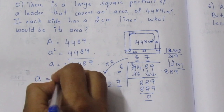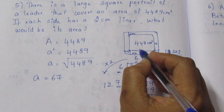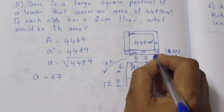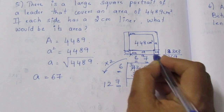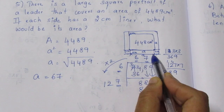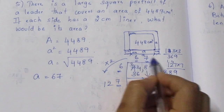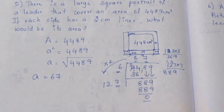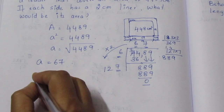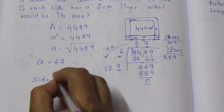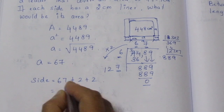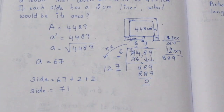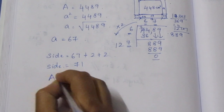So the side of the portrait is equal to 67 cm. Now, the full length including the liner: the side A is 67, and we add 2 cm on one side and 2 cm on the other side. So the new full side equals 67 plus 2 plus 2, which is 71. The new side is 71 cm. So the full square has side 71.